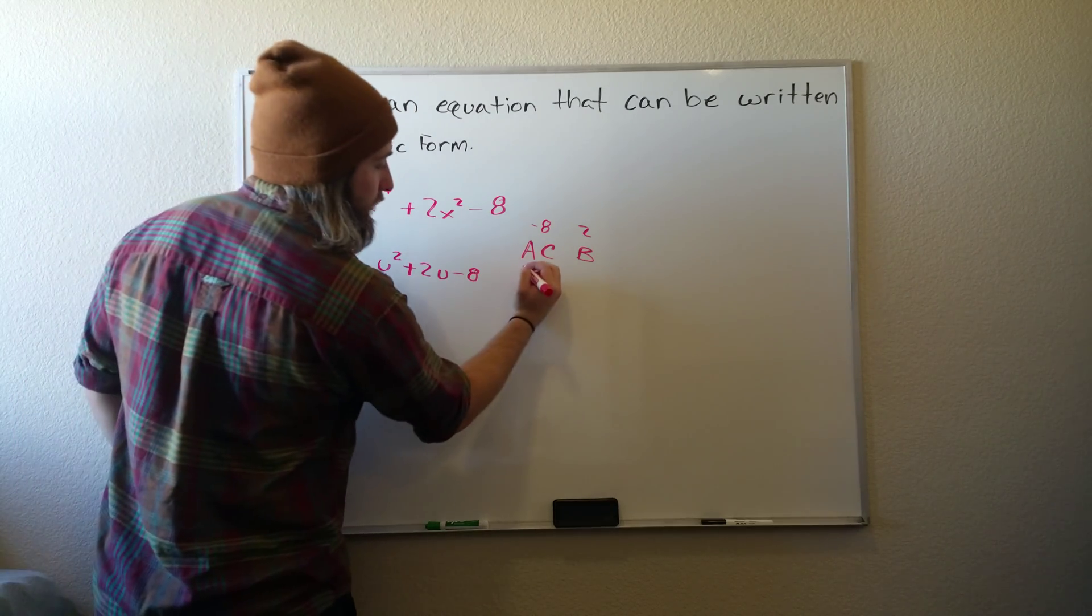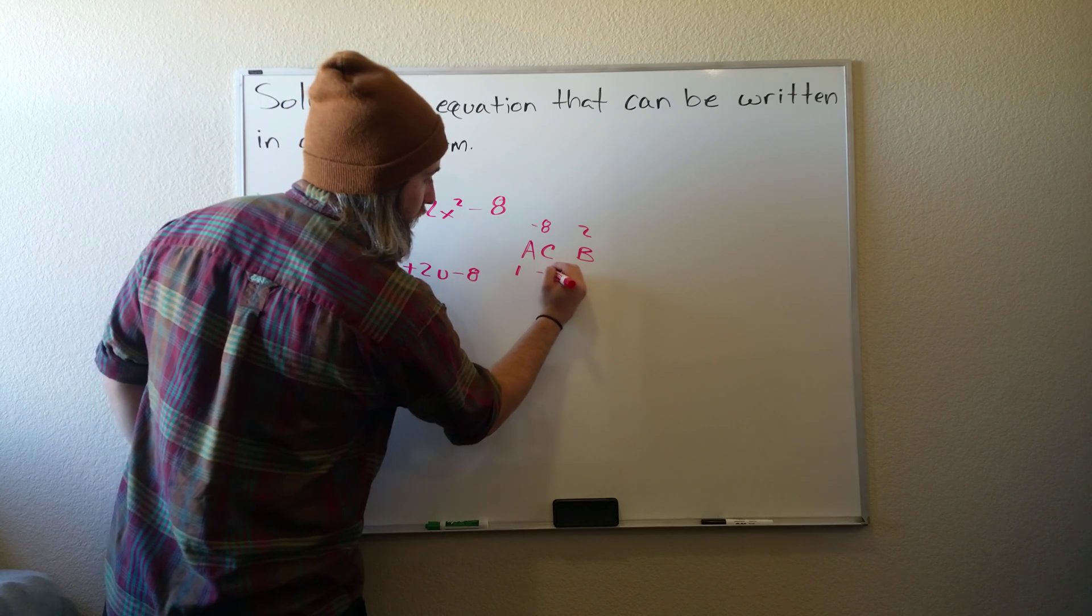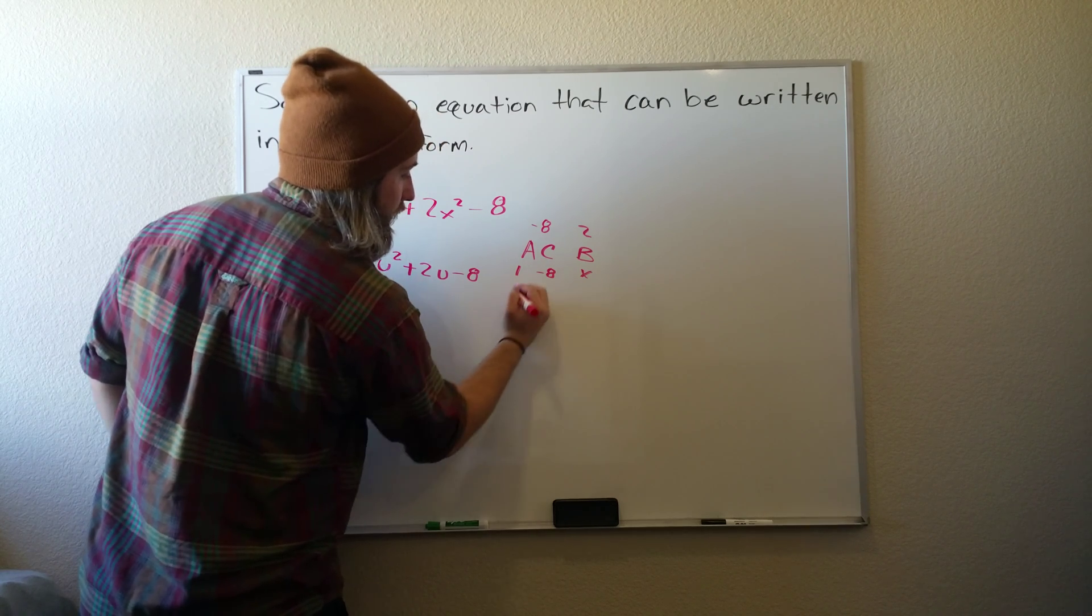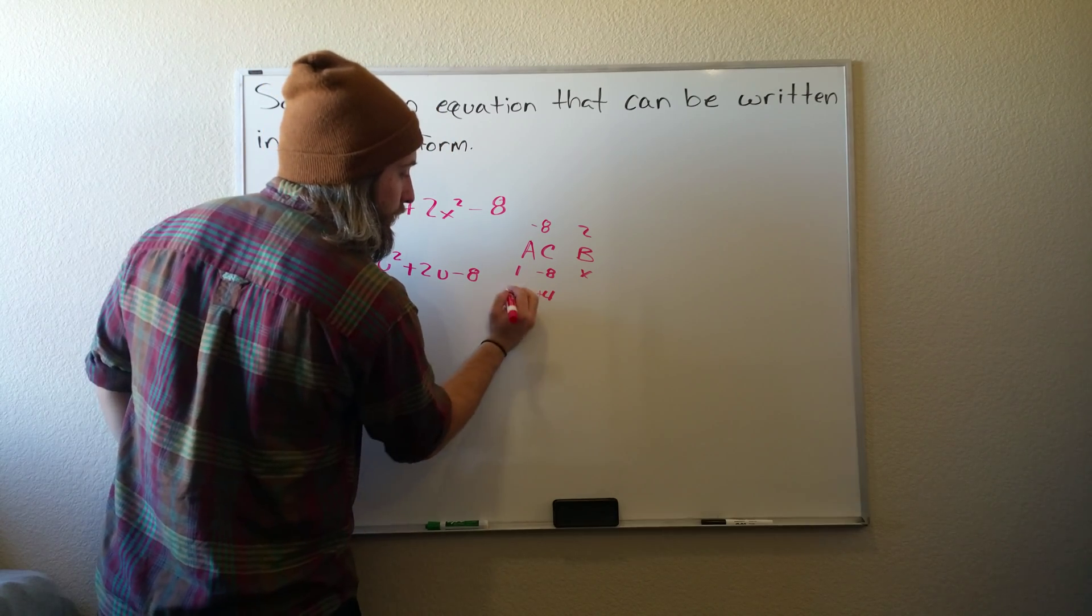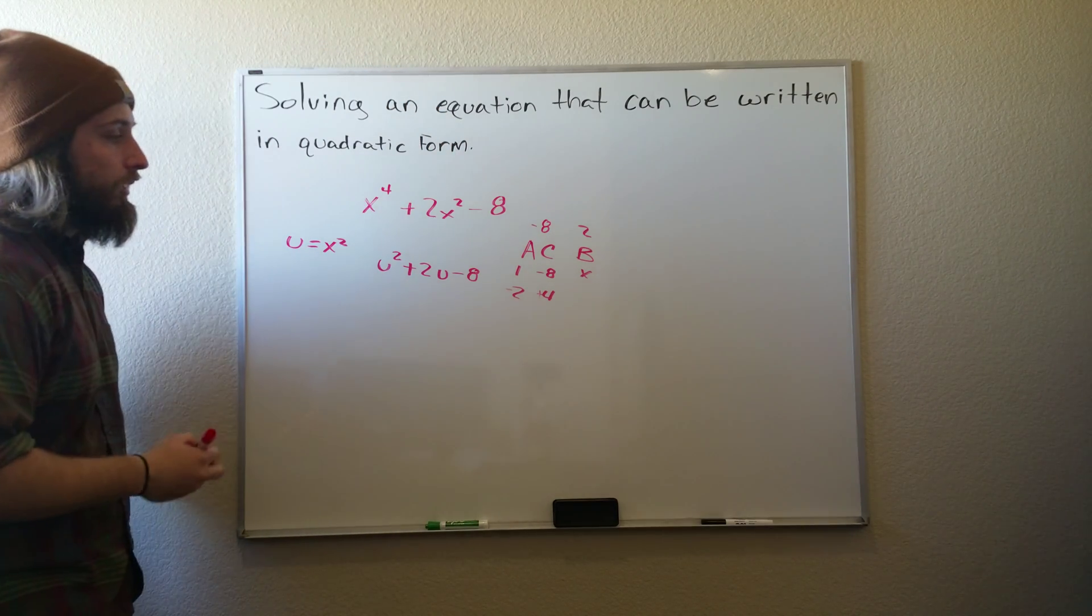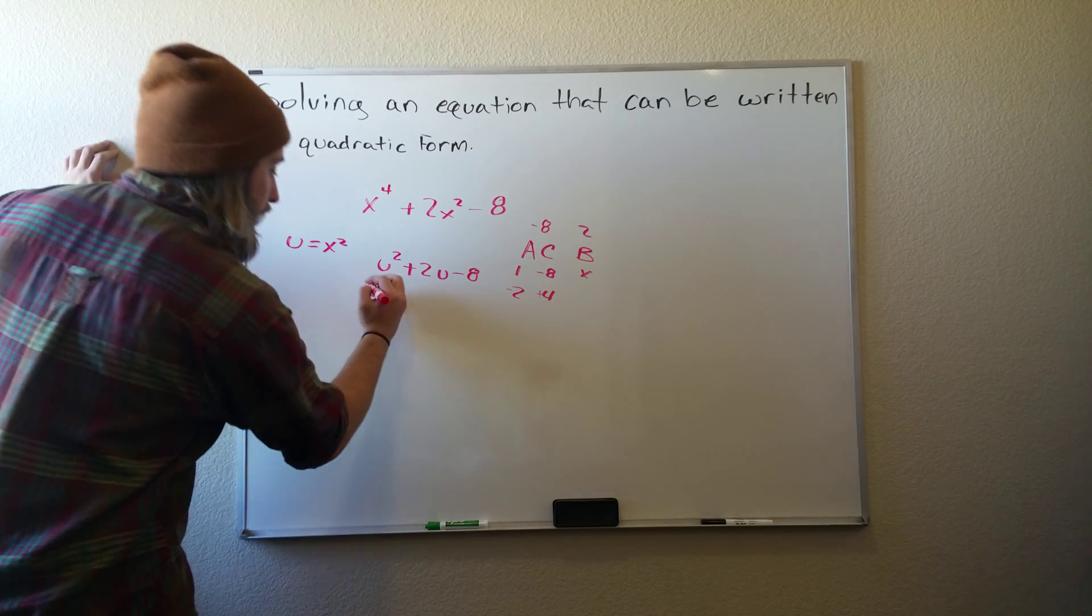So now we'll just go down the factors of 8. So we get 1 and negative 8 but that doesn't add up. 2 and negative 4, we get negative 2, that's pretty close. So just switch the signs. So those are our two middle terms now.